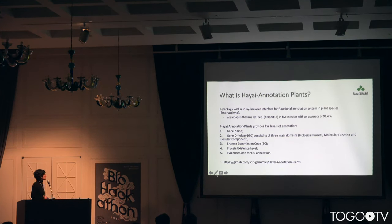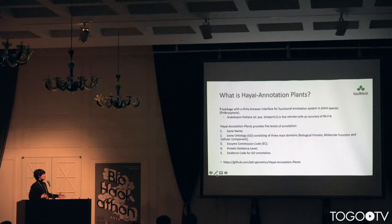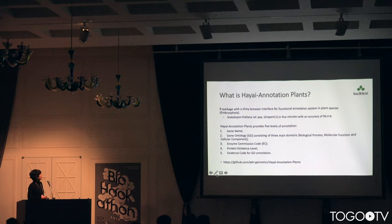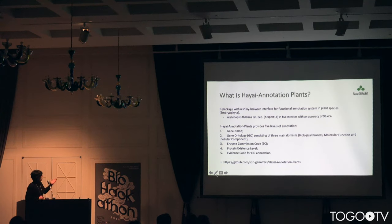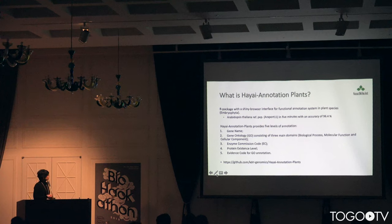What is High-High Annotation Plants? It's an R package based on a Shiny browser interface for functional, comprehensive annotation of plants. Why is it called High-High? 'High' means fast in Japanese — it should maybe be named Shu-High because it's very fast. It can annotate Arabidopsis thaliana — 30,000 genes in five minutes with an accuracy of 96%.